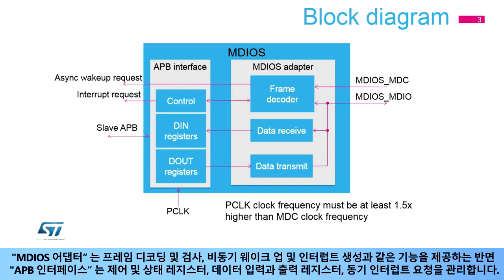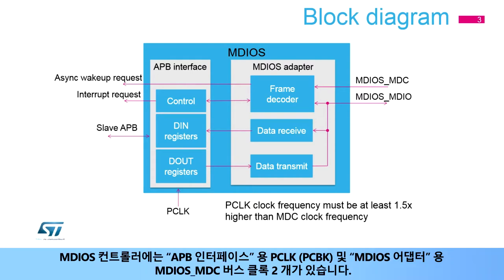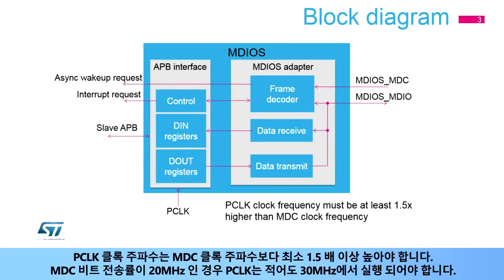Two clocks are available for the MDIOS controller: the APB clock, or PCLK, for the APB interface, and the MDIOS MDC bus clock for the MDIOS adapter. Note that the PCLK clock frequency shall be at least 1.5 times higher than the MDC clock frequency. When the MDC bitrate is 20 MHz, the PCLK shall run at least 30 MHz.